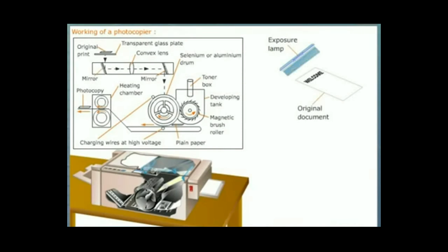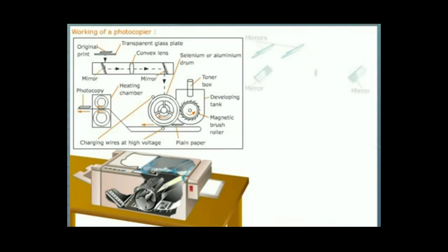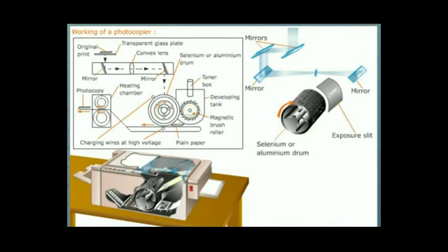The exposure lamp illuminates the original document. The printed matter present on the document absorbs light. The blank areas reflect light. This light reflected from the document is projected through the optical system. The optical system focuses the light on the exposure slit which is present near the selenium drum. The revolving drum loses its positive charge when the reflected light of varying intensity falls on it. Due to this exposure, an invisible electrostatic image called latent image is formed on the selenium drum.